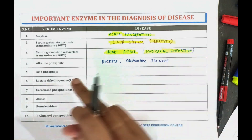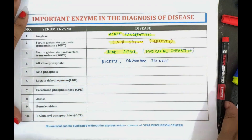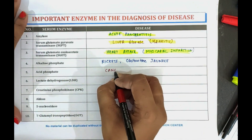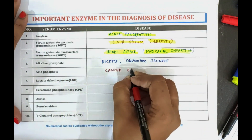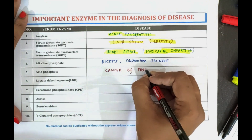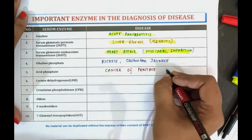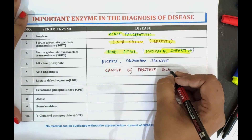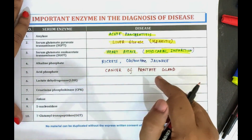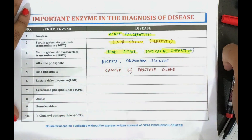Now coming towards the next one, which is acid phosphatase. The acid phosphatase enzyme is used to detect the cancer of the prostate gland.